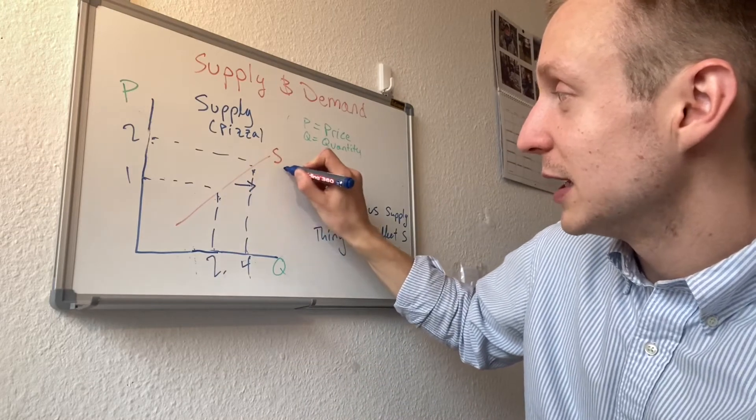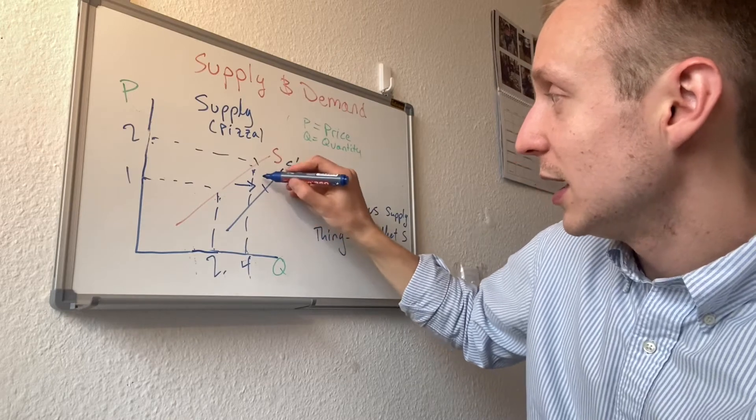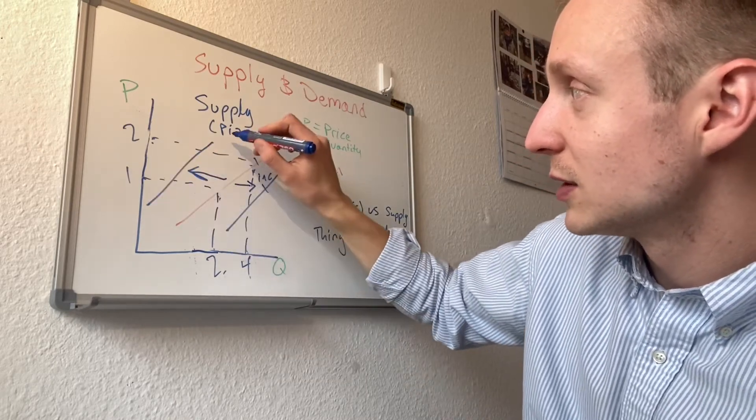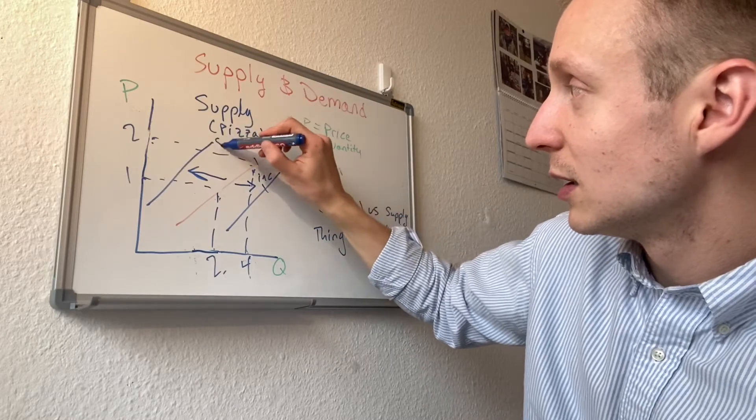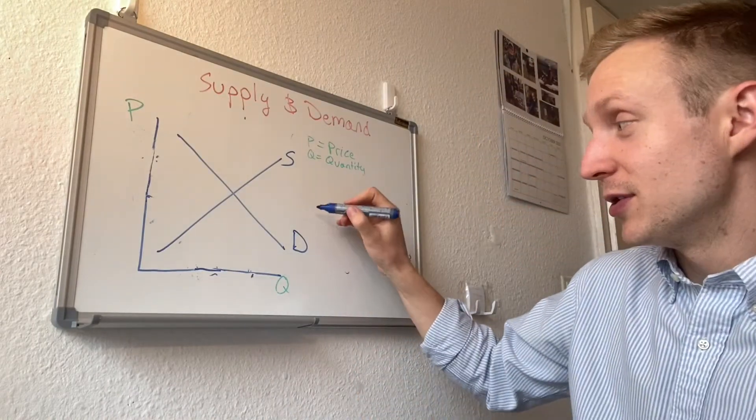And again, so a shift to the right would be an increase in supply. That's one, right? Same slope again, increase. And then a shift to the left would be a decrease in supply. Okay, so here is supply and demand together. We have the downward sloping demand and the upward sloping supply.